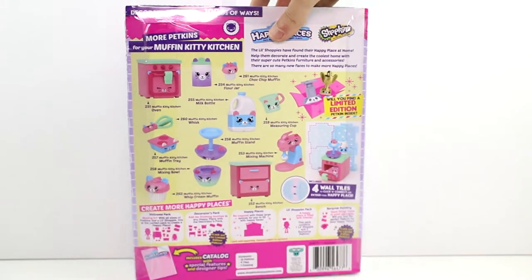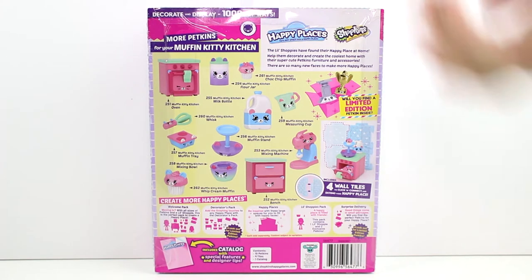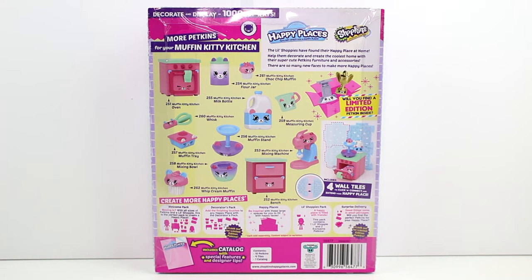Let's go ahead and flip it around. Here is the illustrations of some of the ones that you get inside plus their names like what they're called. Not necessarily their names just like mixer, muffin stand, etc. So inside you get a total of fifteen petkins, four tiles, and one catalogue. You also apparently get four wall tiles to click and connect to extend your happy place.